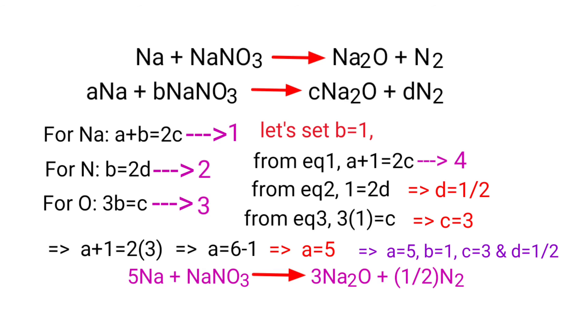So 5 Na plus NaNO3 gives us 3 Na2O plus 1/2 N2.